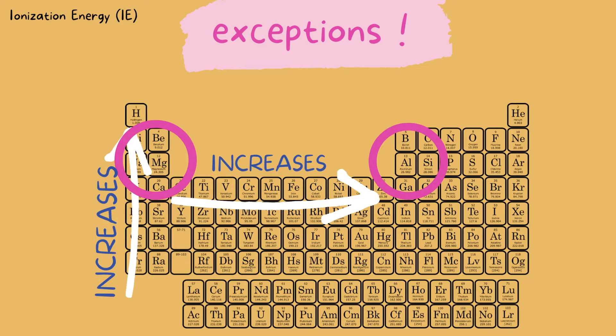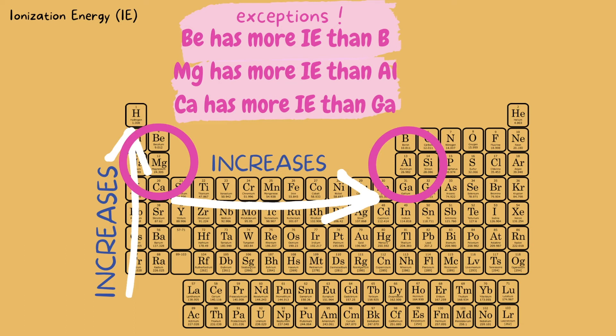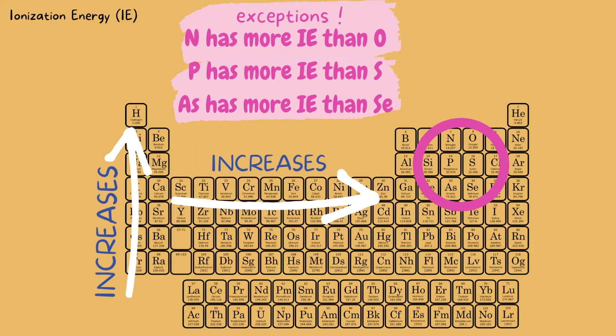Normally we would say the elements on the right side have more IE, but we are going to flip them. So the correct way is: beryllium has more IE than boron, magnesium has more IE than aluminum, and calcium has more IE than gallium. And just a few more exceptions — you're also going to flip these that I've circled. So nitrogen has more IE than oxygen, phosphorus has more IE than sulfur, and arsenic has more IE than selenium.